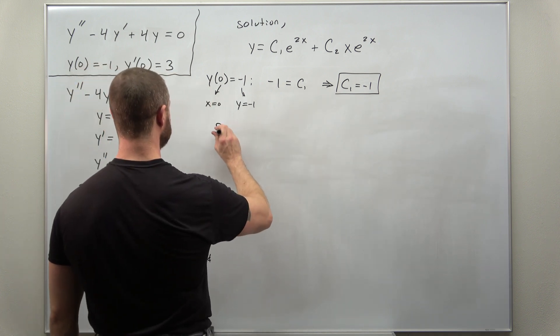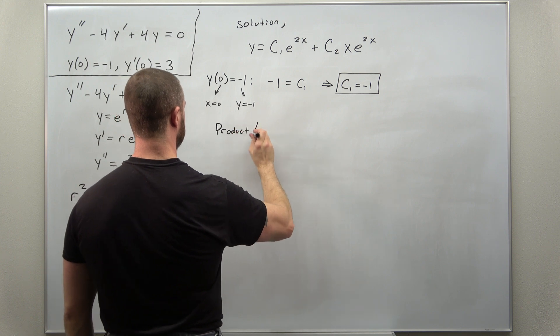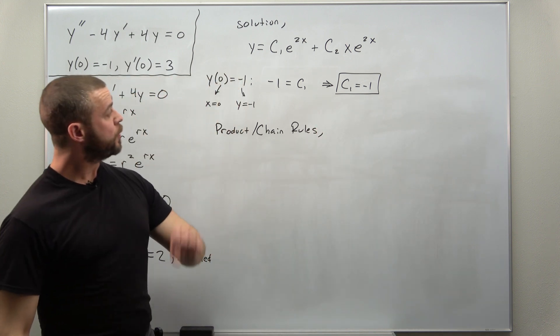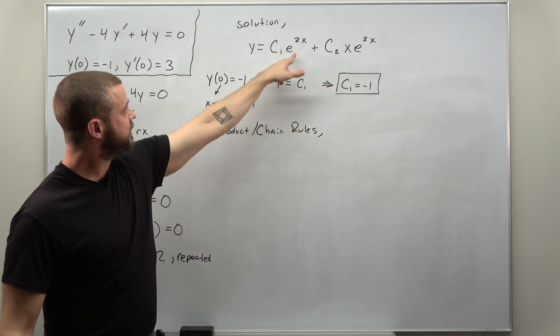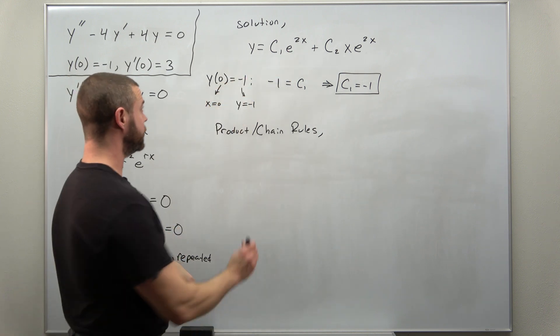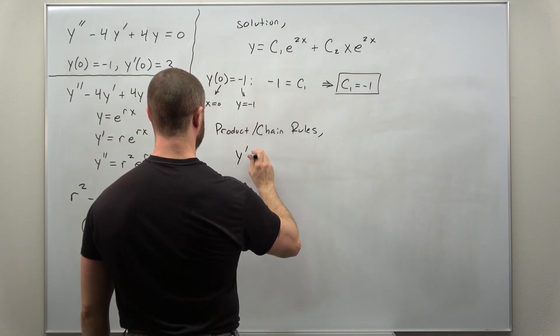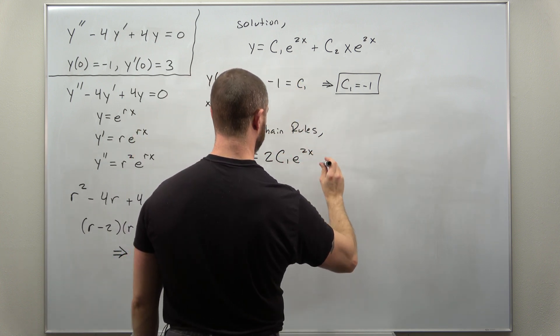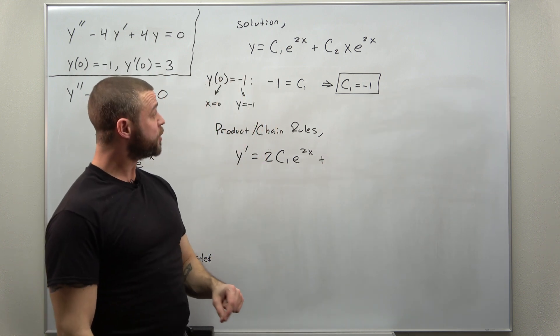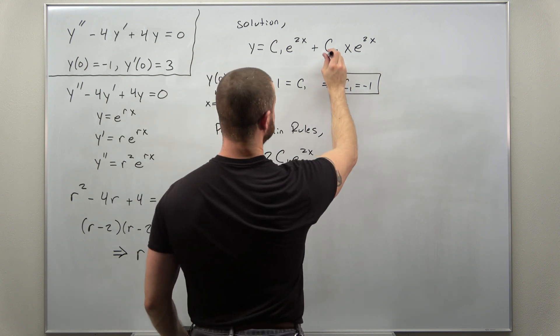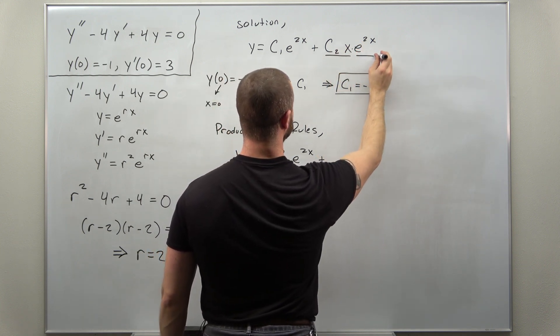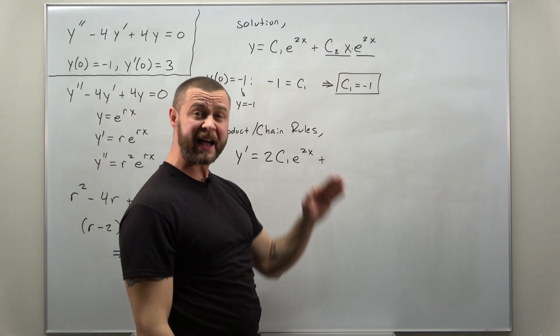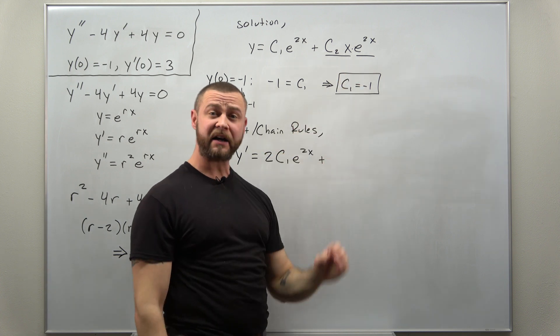So we're gonna calculate using the product and chain rules when we differentiate this term. Differentiate the first term here, that only requires the chain rule. The chain rule's gonna give us a factor of 2, and when we apply the product rule let's think of this as c2x times e to the 2x.